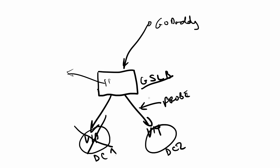A GSLB could also say: send 70% of traffic to data center one and 30% to data center two, returning different IP addresses to distribute load. Or you could say: return data center one until it reaches 90% capacity, then start returning data center two until data center one drops below 70%. You can get pretty creative in how you answer DNS requests to distribute traffic between two data centers or just do a simple active-standby.